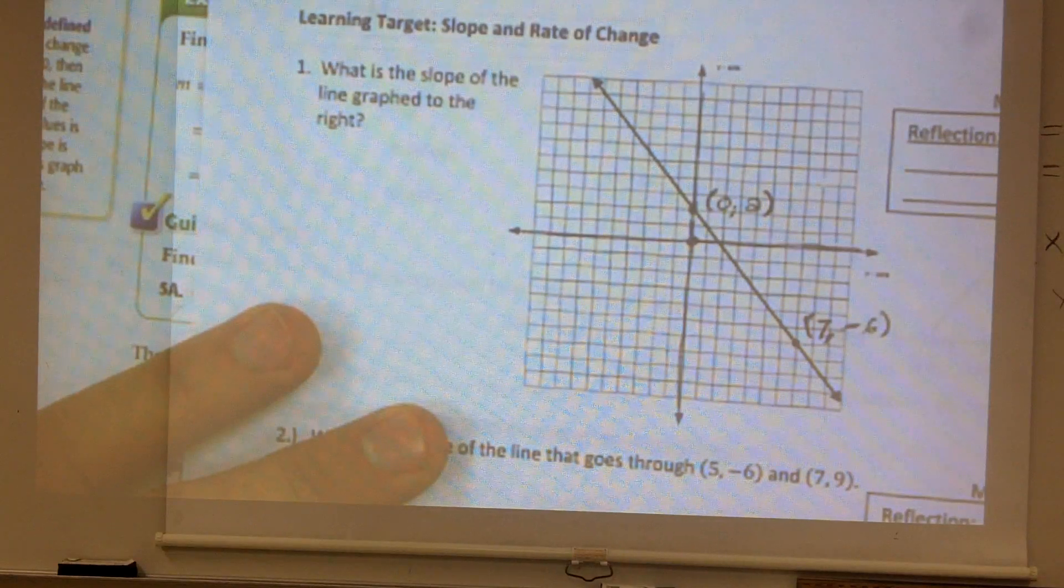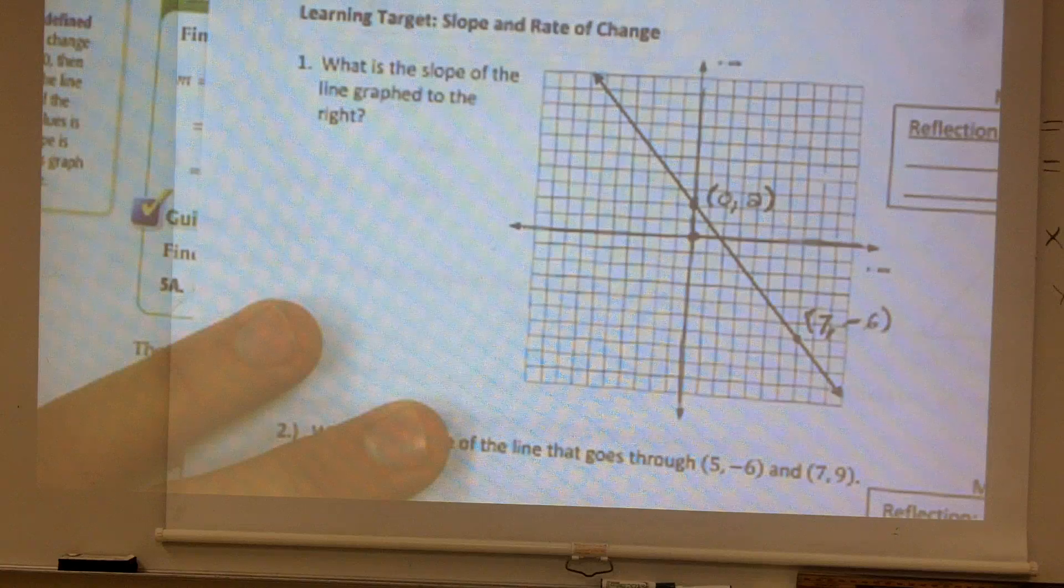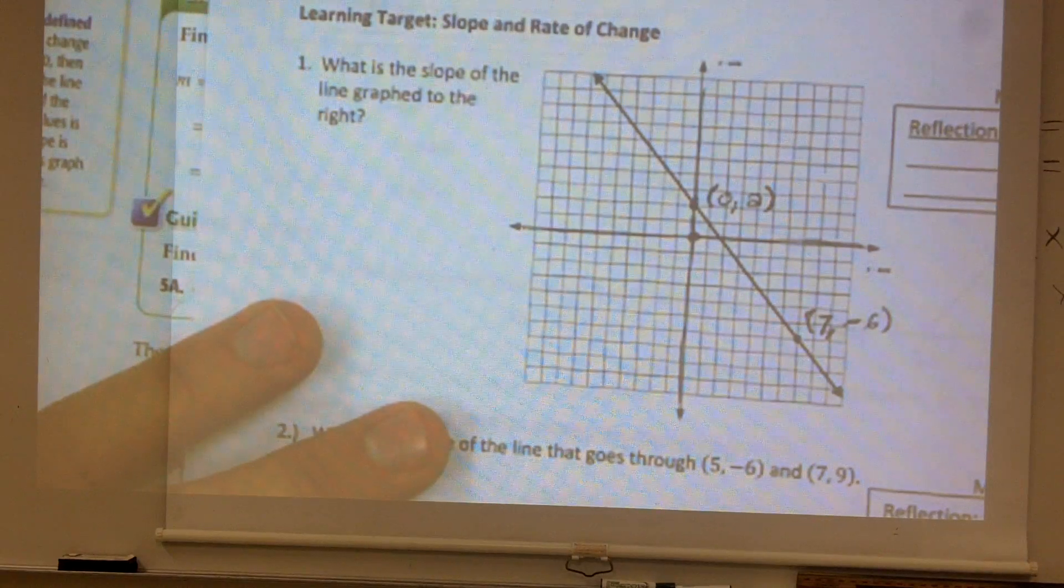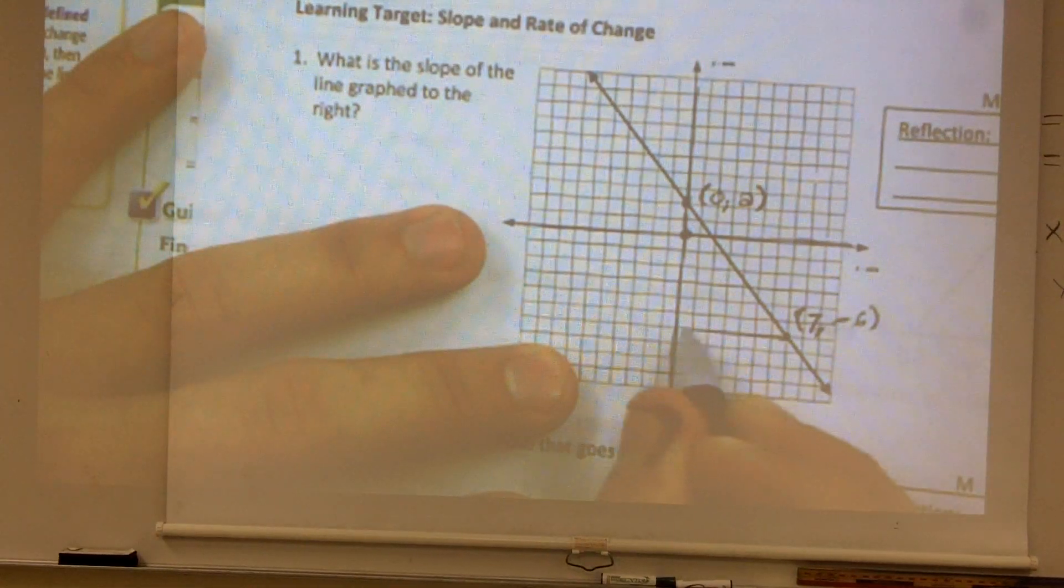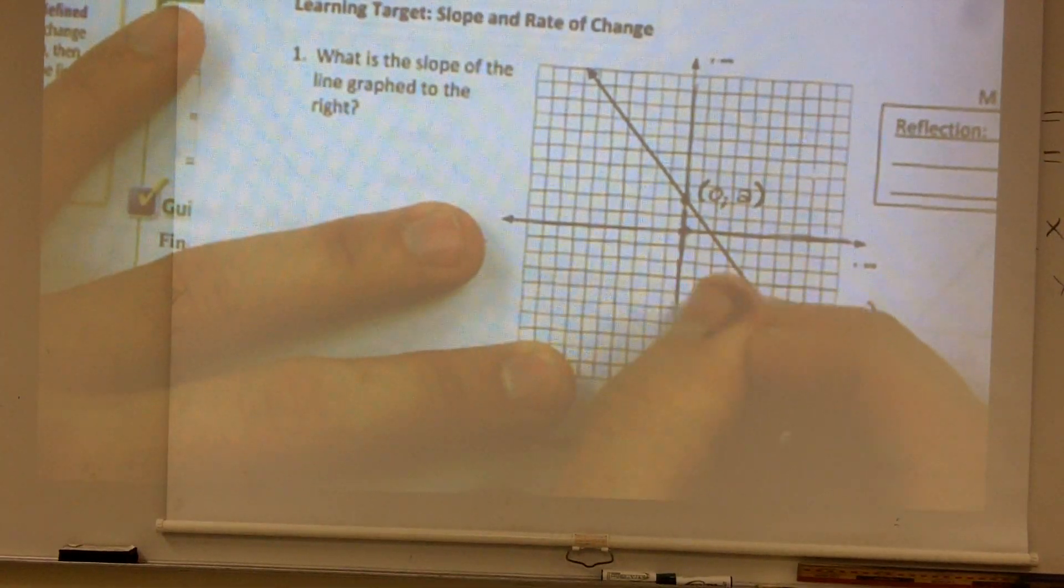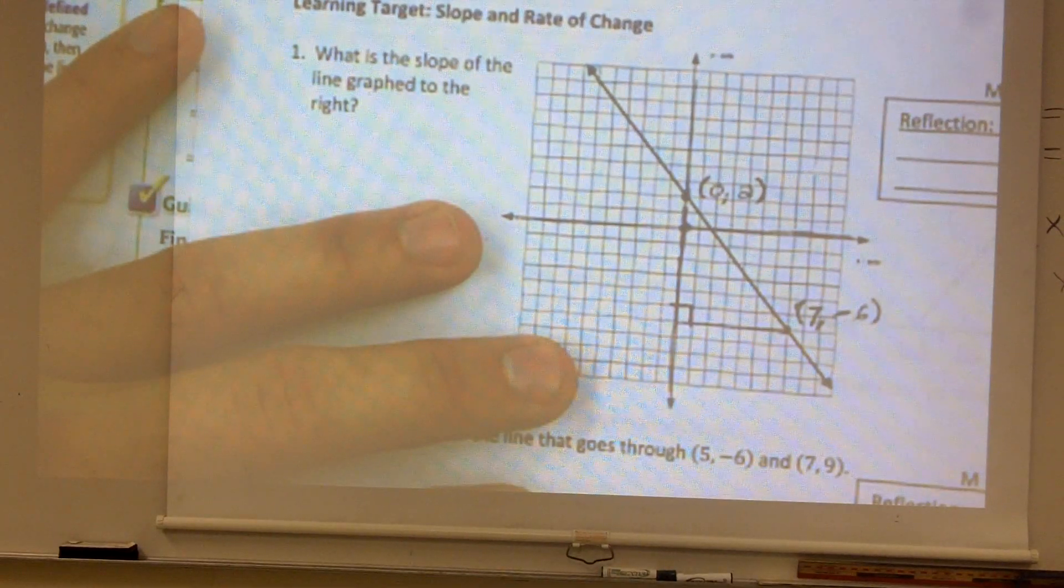Now, there's two ways we can do this, ladies and gentlemen. We could use these coordinate points, or we can do what we call a slope triangle. To do a slope triangle, what you're going to do is you're going to follow the grid lines and make a right triangle, meaning it's going to have a right angle. So make it vertical and a horizontal line.